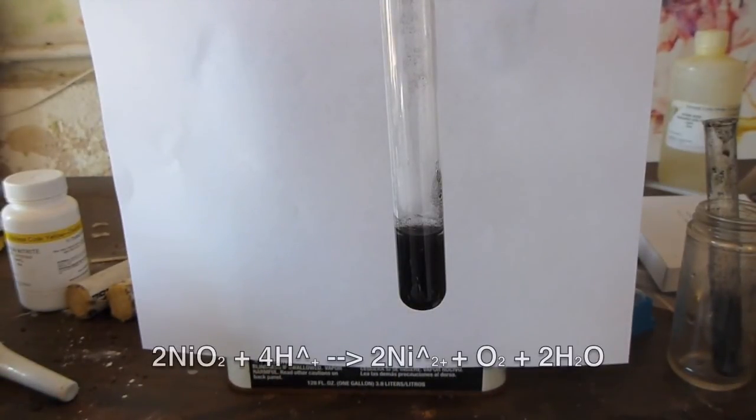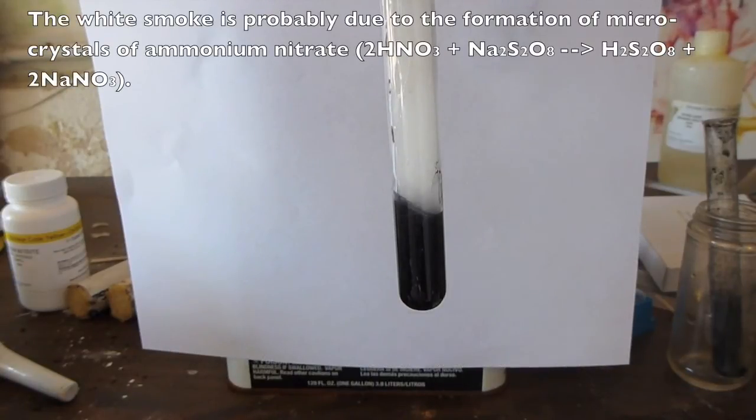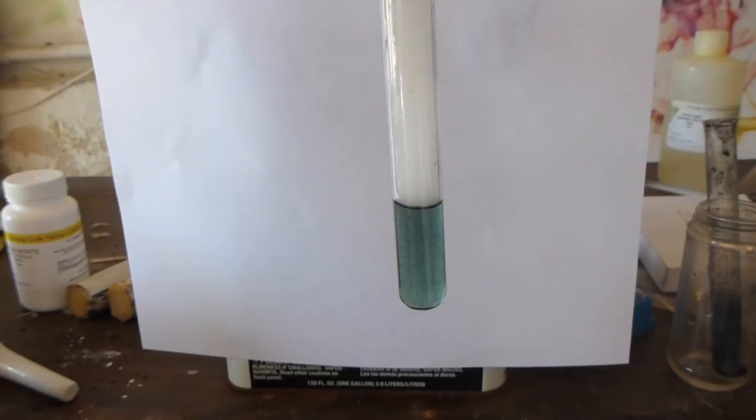I am now going to add some nitric acid to the test tube, which will decompose the dioxide, forming normal nickel 2+ ions. You'll see that the solution clears up, and you're left with the normal kind of greenish blue color of nickel 2+ ions.